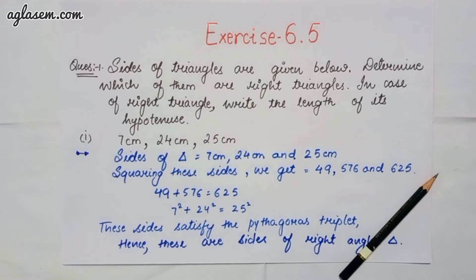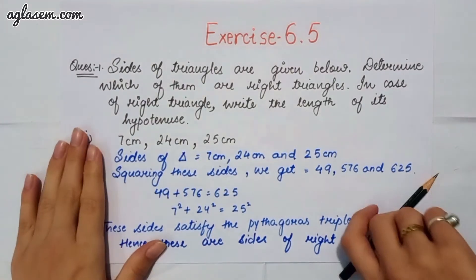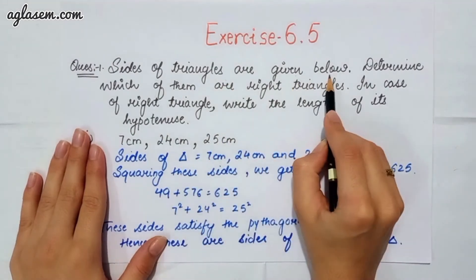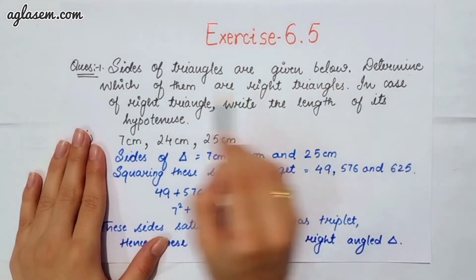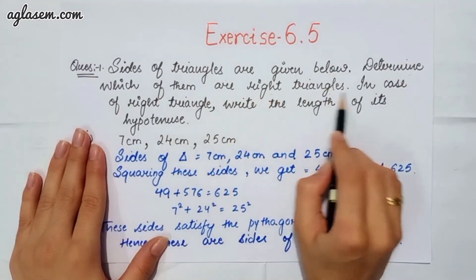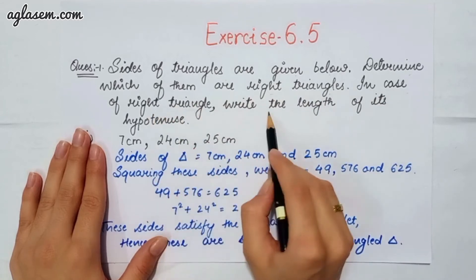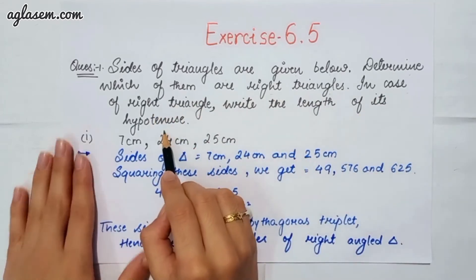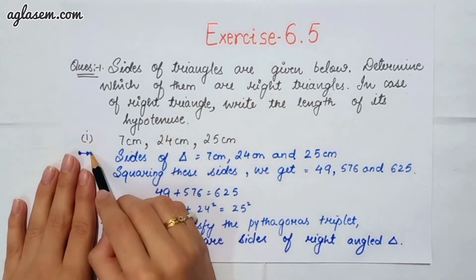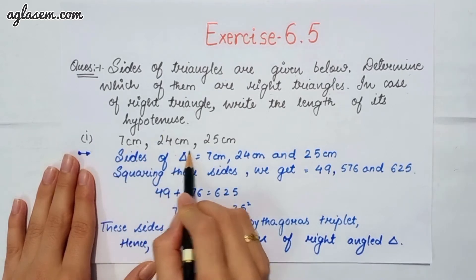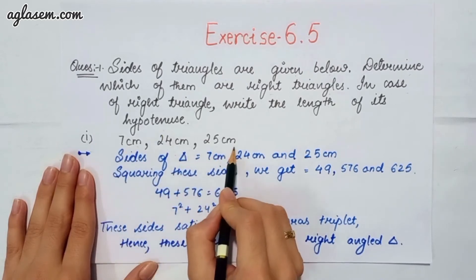Starting with the 5th exercise, that is 6.5, our first question says: sides of a triangle are given below. Determine which of them are right triangles. In case of a right triangle, write the length of its hypotenuse. Part 1 says 7 cm, 24 cm and 25 cm.